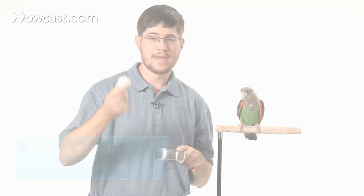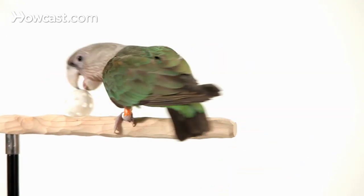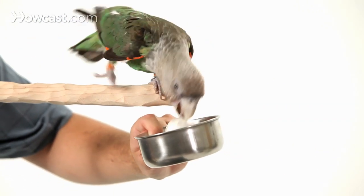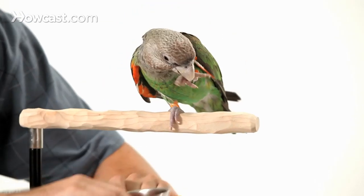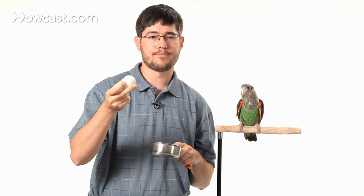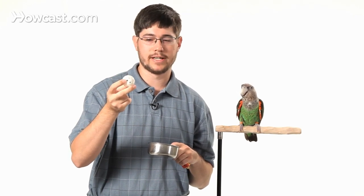All right, so Truman, my cape parrot's going to help us demonstrate how to fetch. I like to use a wiffle golf ball as the object. For a macaw, you might want to use a wiffle baseball, and for a smaller parrot, you might want to use like a little checkers piece or something small that they can hold. You find something that's easy for the parrot to grip and be able to hold in its beak.